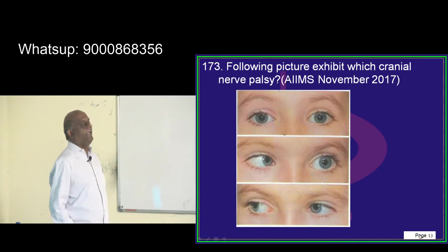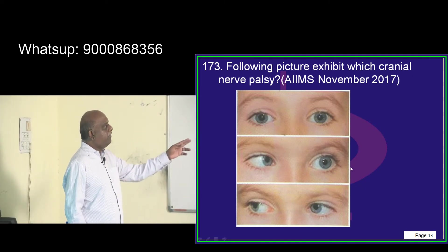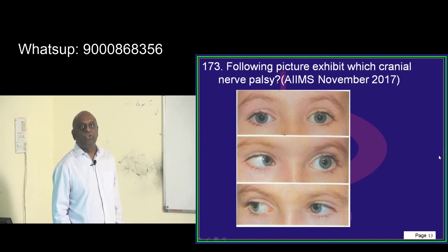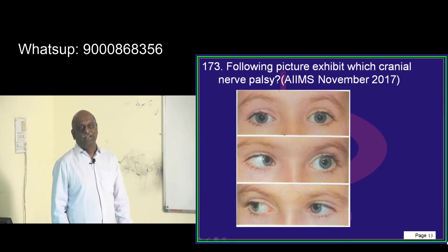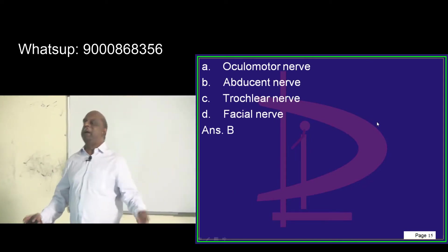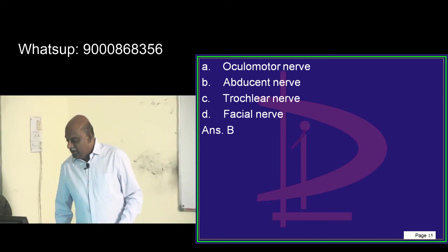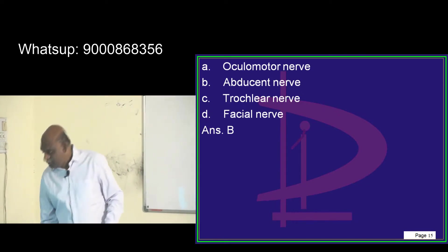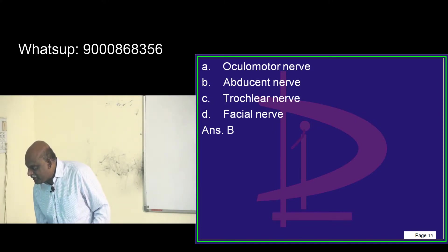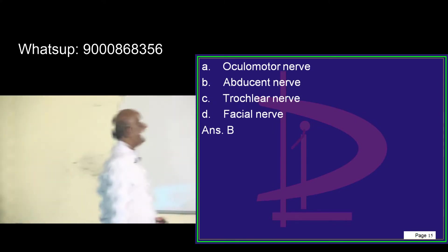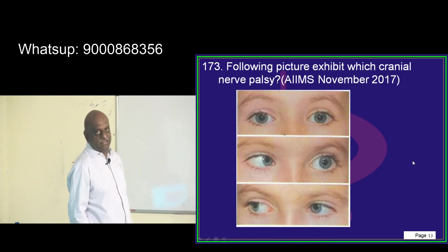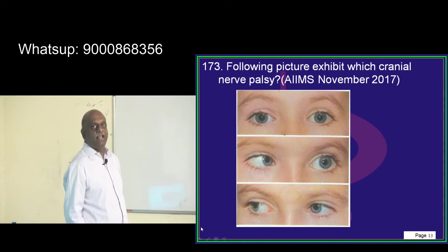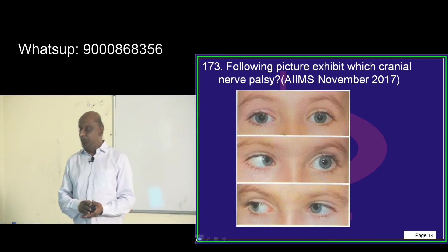What is this cranial nerve palsy where, during expected abduction on conjugate gaze, the eye is unable to abduct but is able to adduct? That is abducent nerve palsy — the easiest question. On lateral gaze, this eye is unable to abduct, whereas on medial gaze both eyes are able to gaze properly.